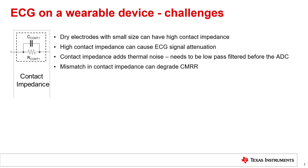Some of these challenges are as follows. High contact impedance can cause ECG signal attenuation. High contact impedance also adds thermal noise, and this might warrant low-pass filtering before the signal is converted by the ADC. Additionally, a mismatch in the contact impedance between the electrodes can degrade the common mode rejection ratio, or CMRR, of the system.